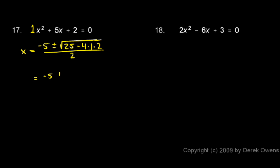So this works out to negative 5 plus or minus the square root of 25 minus 8, which is 17. Negative 5 plus or minus the square root of 17 over 2.